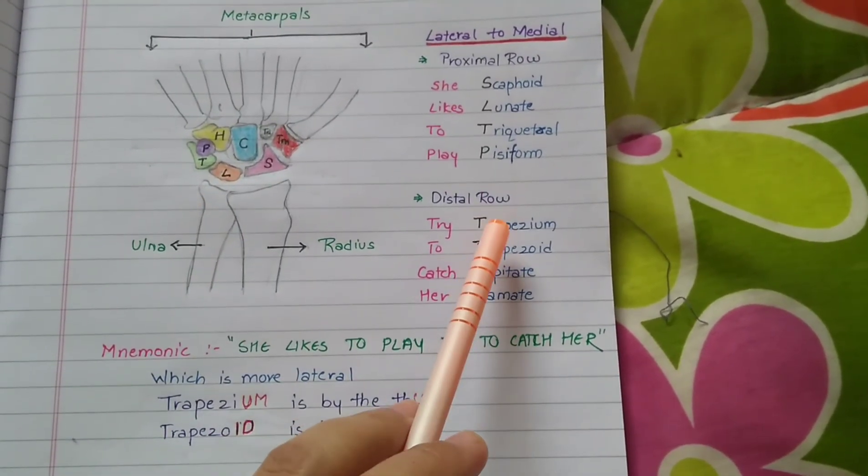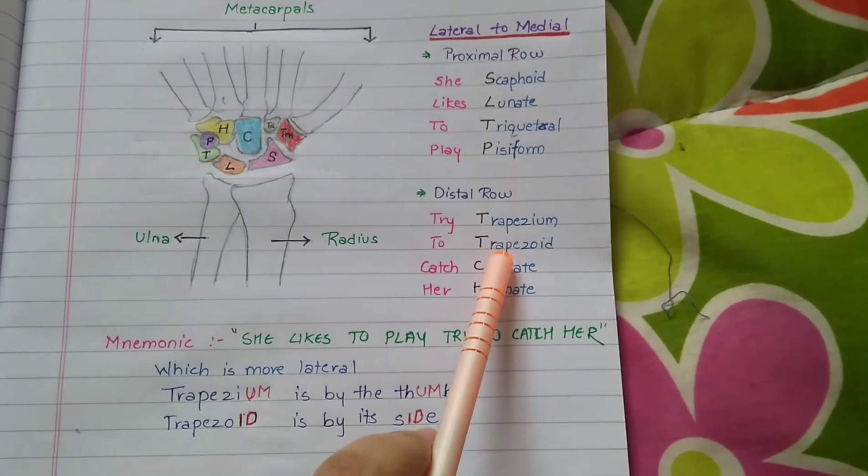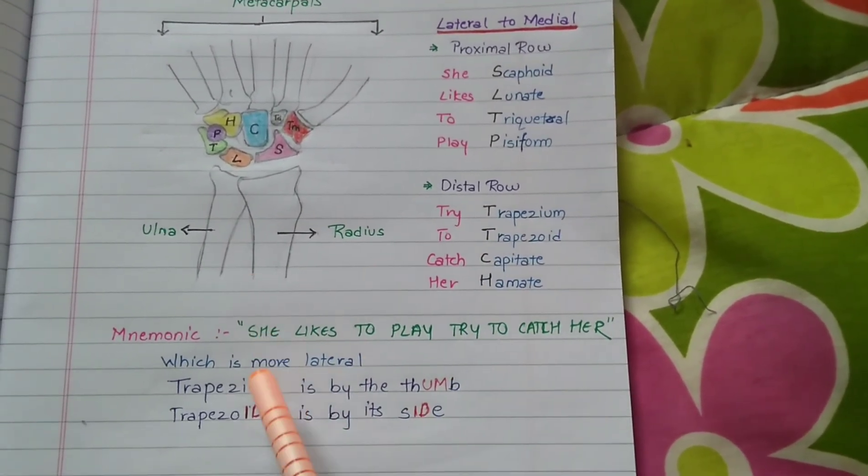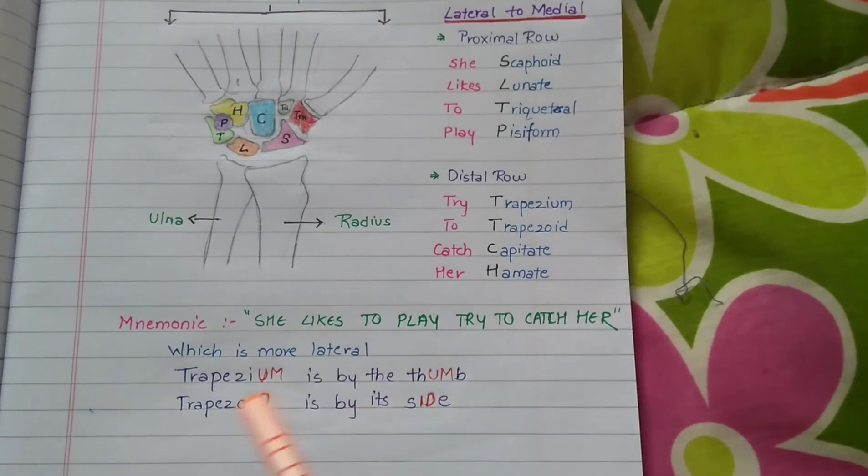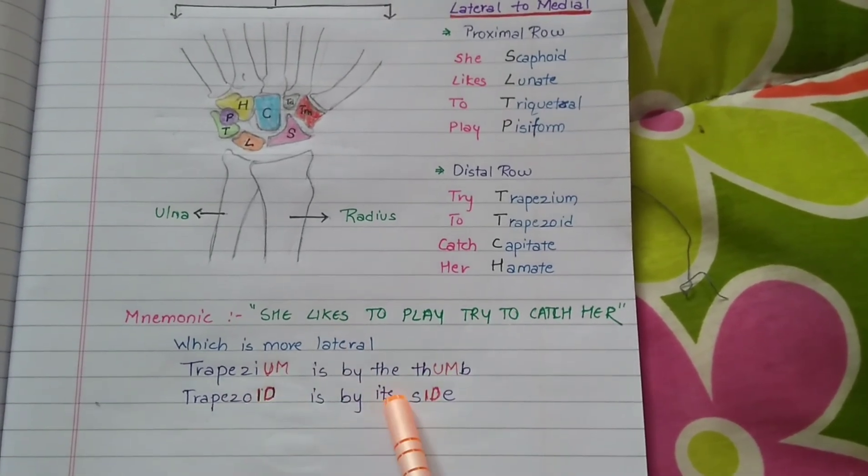To avoid the confusion between trapezium and trapezoid which is more lateral, you can remember it as trapezium is by the thumb and trapezoid is by its side.